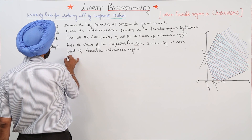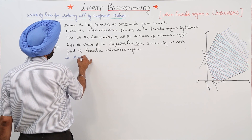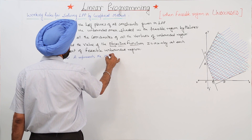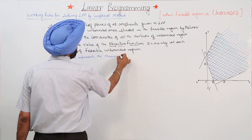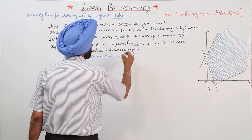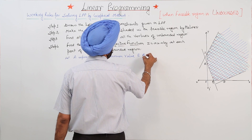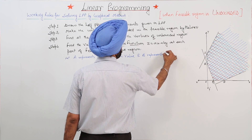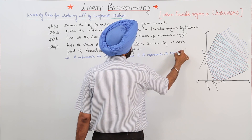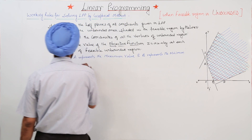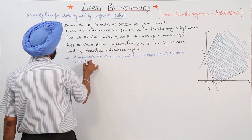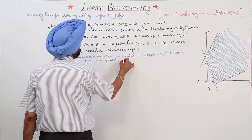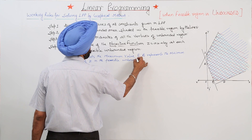Let A represent the maximum value and B represent the minimum value of Z in the feasible unbounded region.